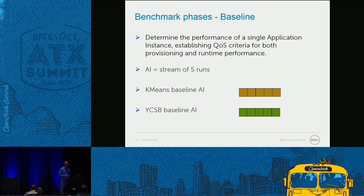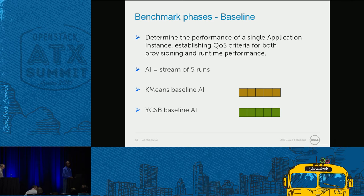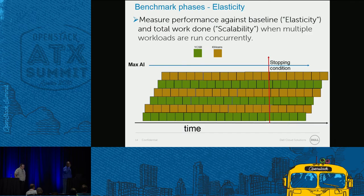This benchmark has two phases. In the baseline phase, these two workloads run separately, one after the other, for only five iterations each. This depicts the performance of the cloud when a workload is running on its own. In the elasticity phase, these workloads run simultaneously at the same time, and once they start running they continue until the benchmark is stopped.